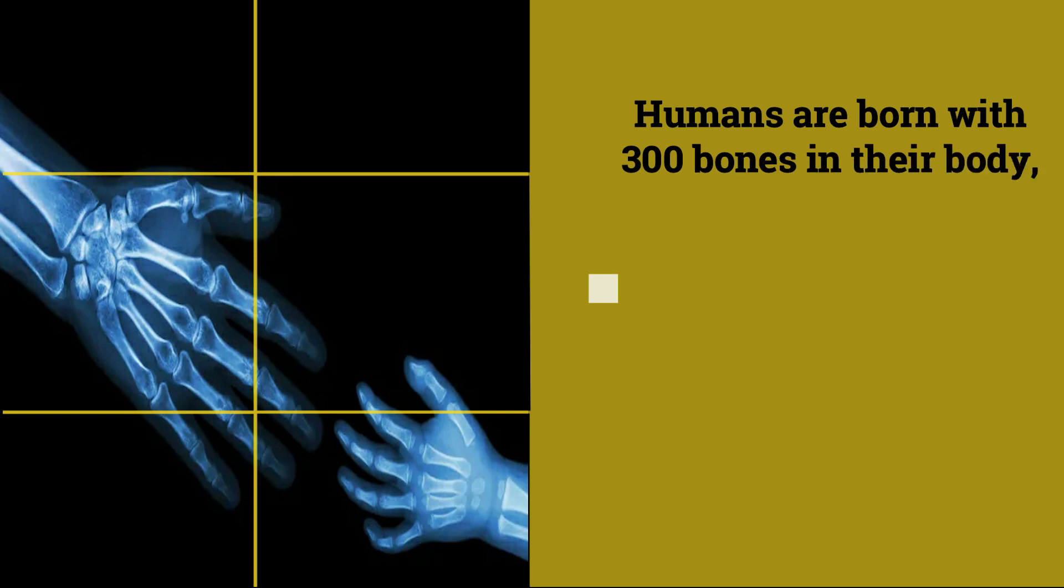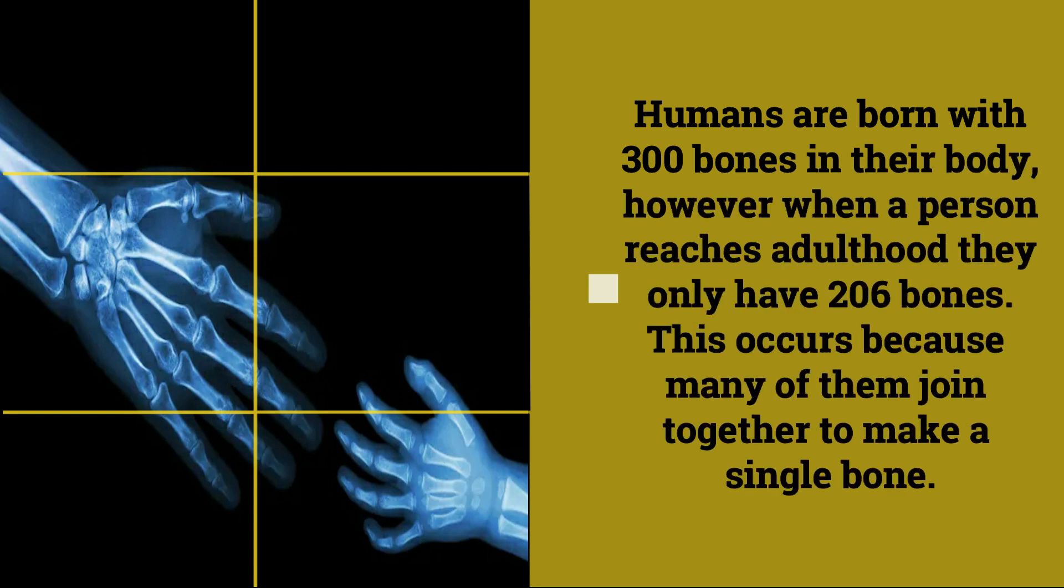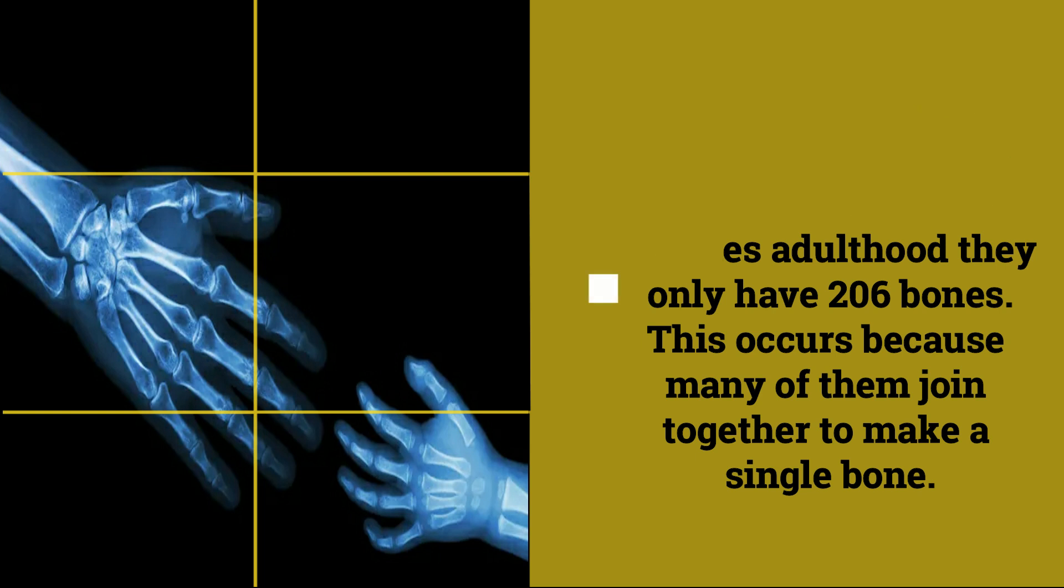Humans are born with 300 bones in their body, however when a person reaches adulthood they only have 206 bones. This occurs because many of them join together to make a single bone.